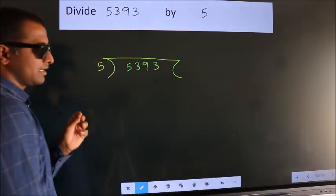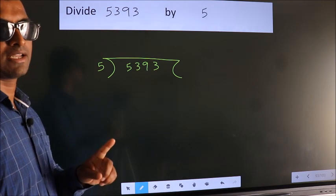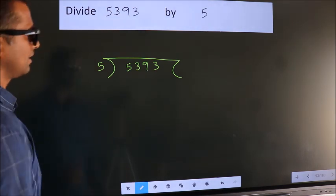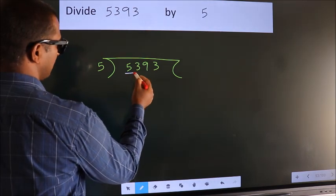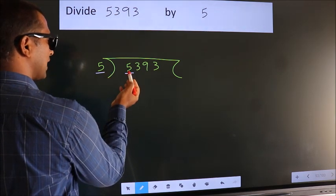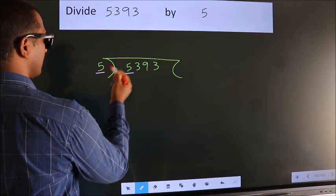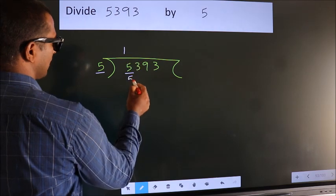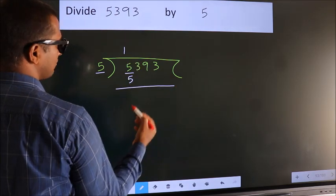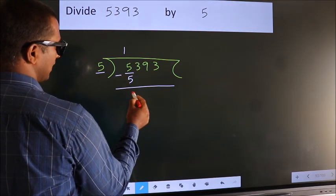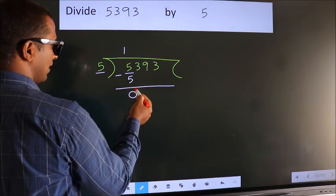This is your step 1. Next, here we have 5. Here 5. When do we get 5? In 5 table. 5 once, 5. Now we should subtract. We get 0.